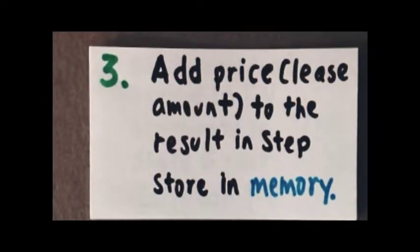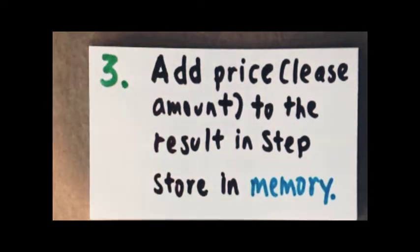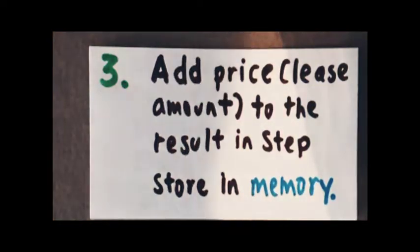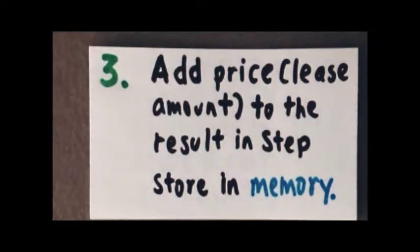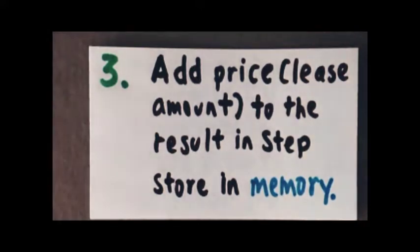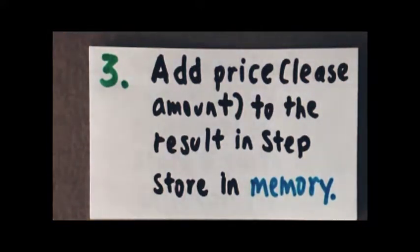In step 3, you're going to use the result from step 2 and add the lease amount — or the price — and then you're going to get the numerator. Then you're going to store that result in memory; any memory register will do.